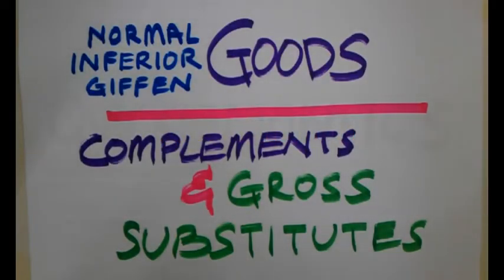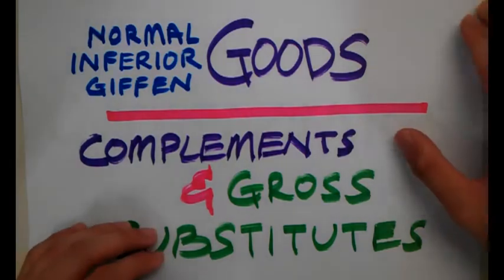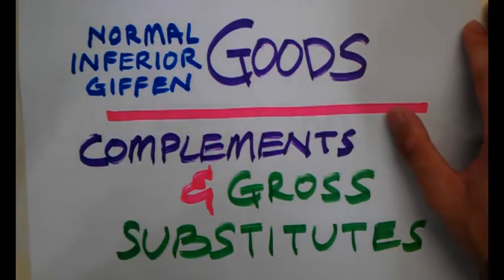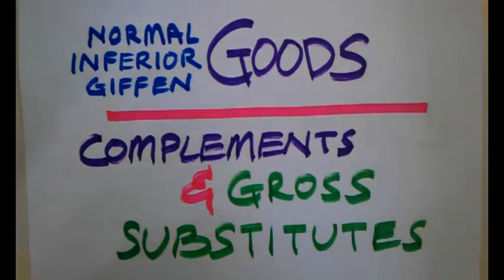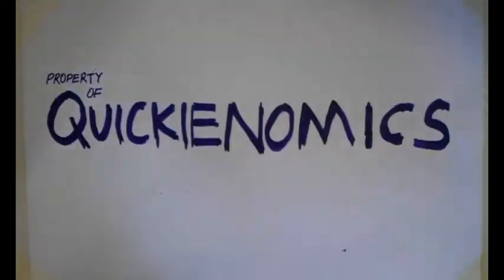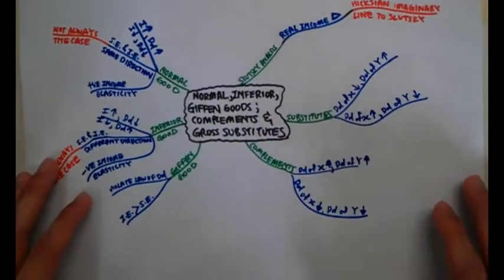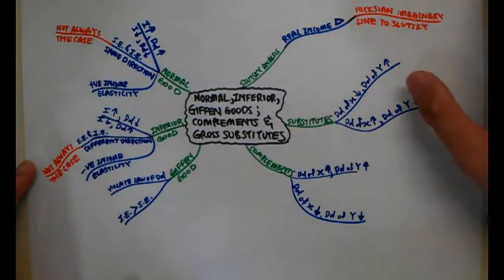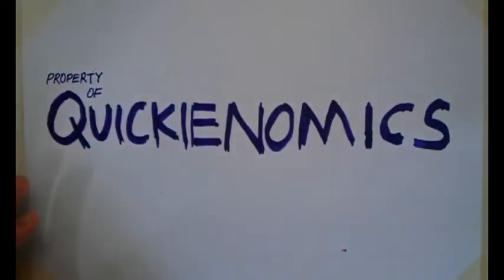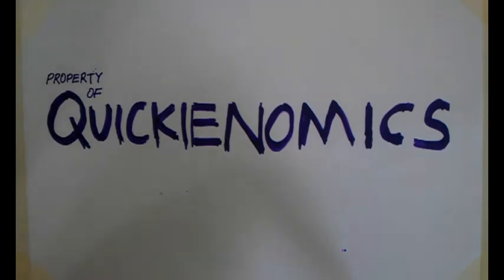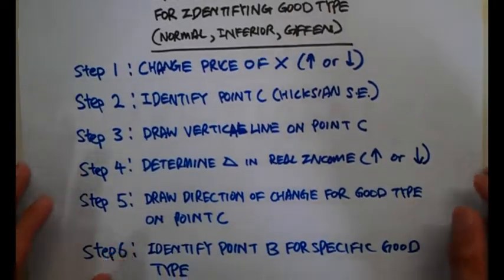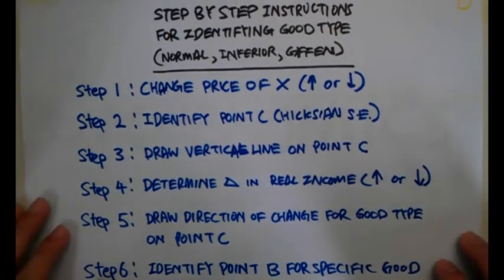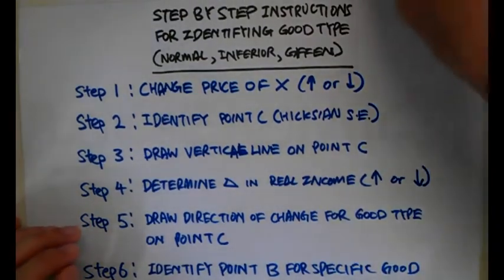Today we're going to talk about the different kinds of economic goods and how we're going to use consumer theory to analyze and identify these goods. Please download the mind map on quickenomics.wordpress.com.